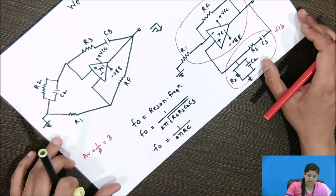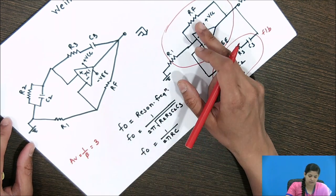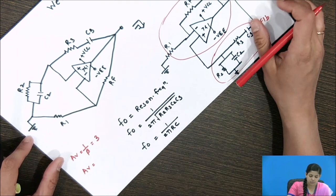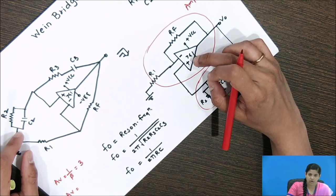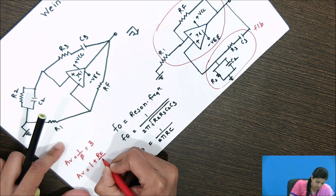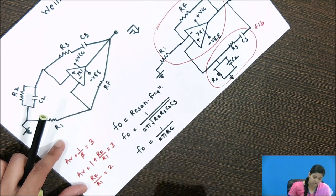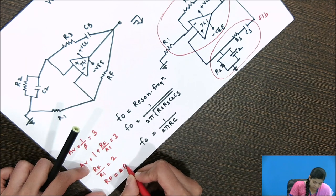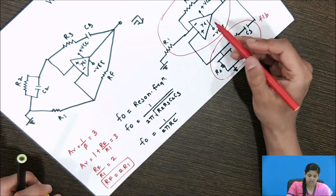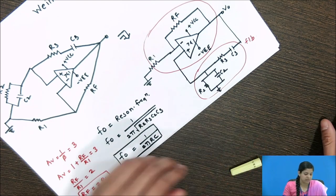For the design of the amplifier, we require the values of R1 and RF. Since it is a non-inverting configuration of the op-amp, the gain is given as Av = 1 + RF/R1, and this value equals 3. So RF/R1 = 2, meaning the RF value must be twice that of R1. Using this equation, we can design the resistors required for the feedback as well as the inverting terminal connection. This is all about the Wien bridge oscillator.